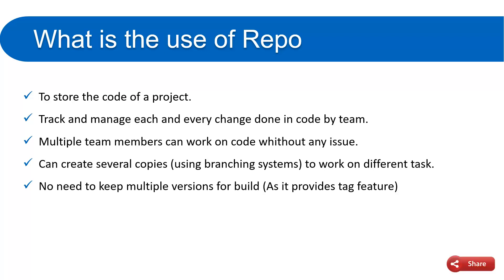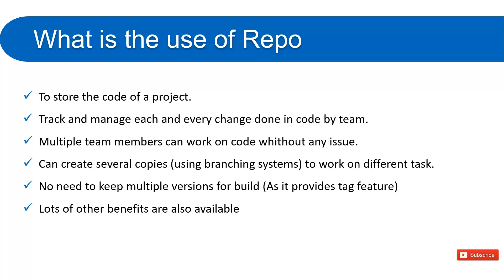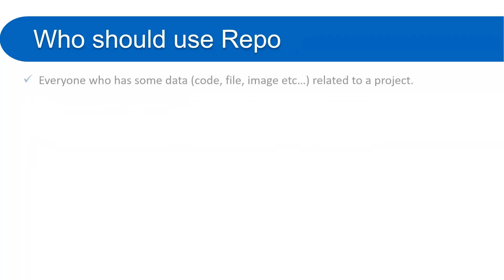If you are not using version control, the problem is: suppose you've made changes and your code is ready for production deployment. For backup, you save a copy in your file system. After each sprint, you again create and save another copy — so with each build you are creating lots of copies and wasting memory. If you use version control, there is no need to create multiple copies for each build; you can handle all this using the tag feature provided by version control. There are many other benefits available in Azure Repo.